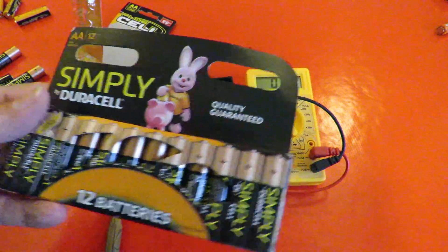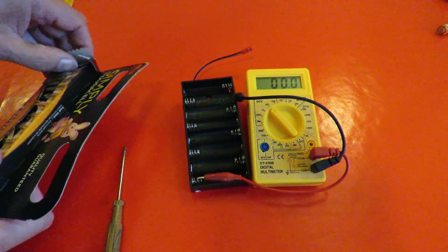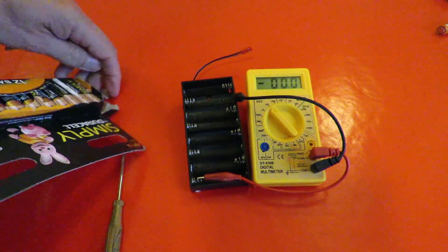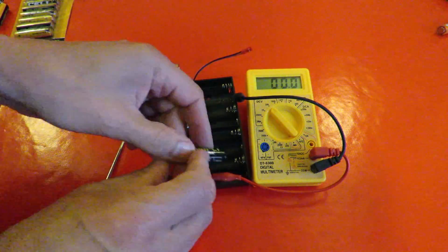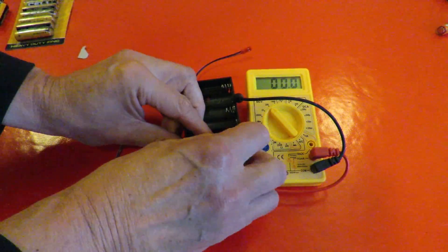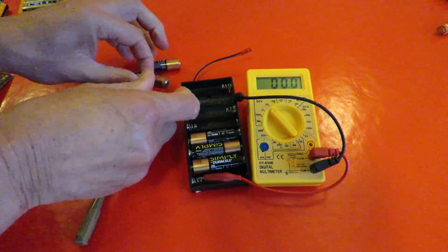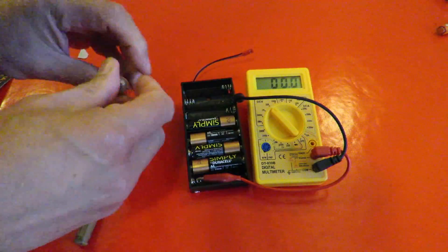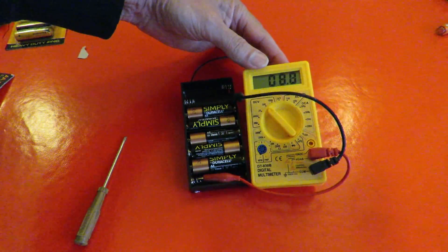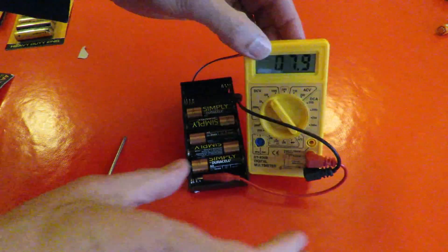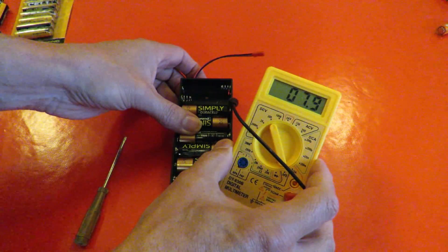Here we are, an unopened pack. First five, one, two, three, four, five. Seven point nine, eight volts. We're flashing there. Yeah, just on eight volts.